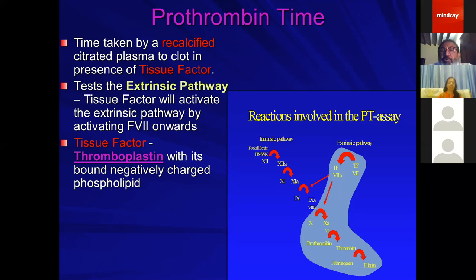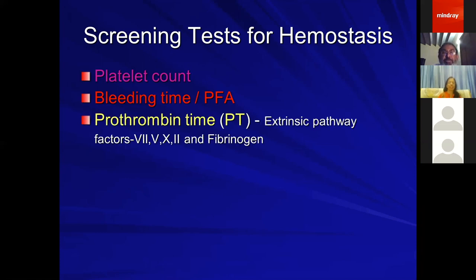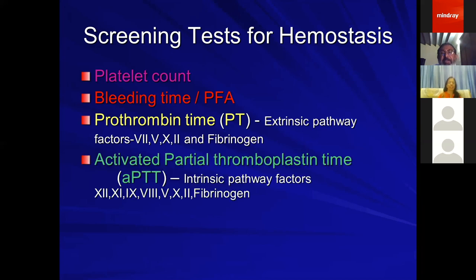The screening tests for hemostasis are: platelet count, bleeding time (which assesses platelet activity or platelet function), prothrombin time (which covers extrinsic pathway factors), and activated partial thromboplastin time (which covers intrinsic pathway factors). Together, these cover fairly the entire area of coagulation.